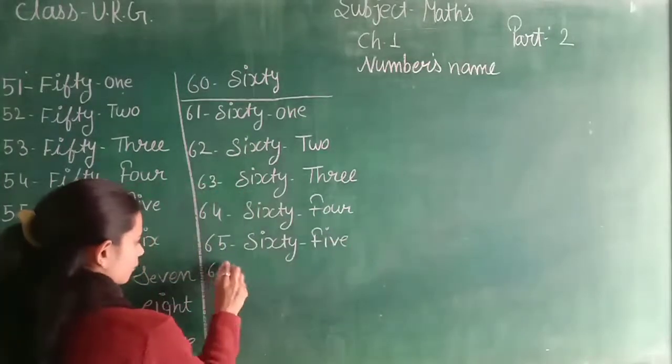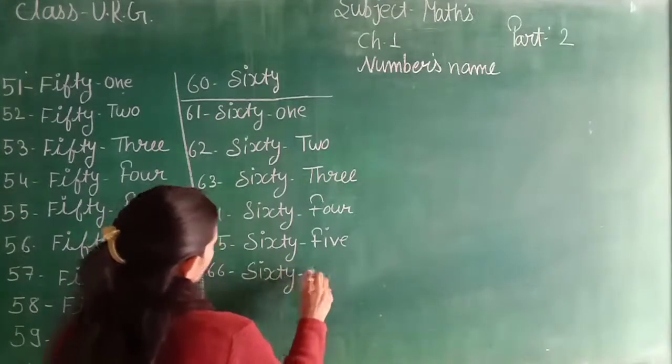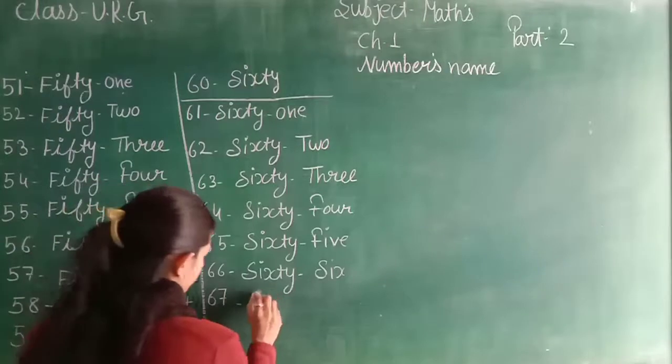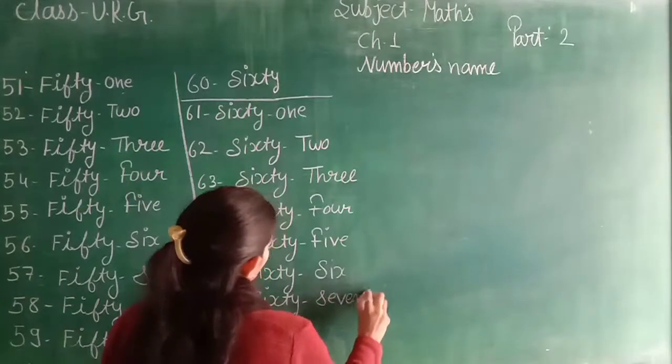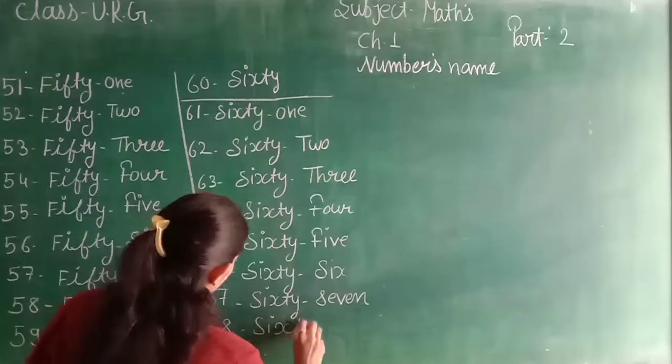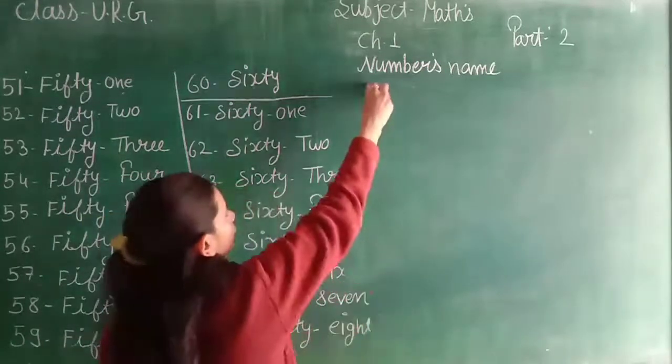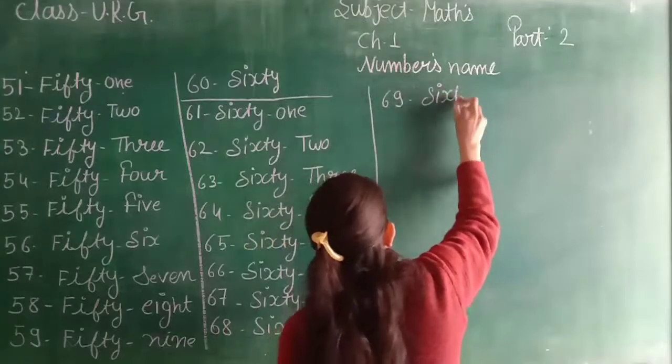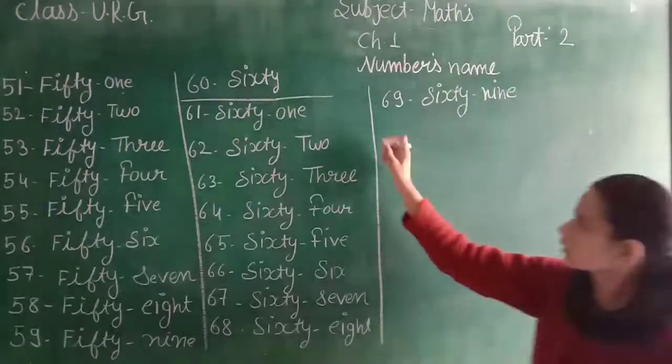We have 66, S-I-X-T-Y, 66, S-I-X, 6. 67, S-I-X-T-Y, 67, S-E-V-E-N, 7. We take here 68, S-I-X-T-Y, 68, E-I-G-H-T, 8. We take here 69, S-I-X-T-Y, 69, N-I-N-E, 9.